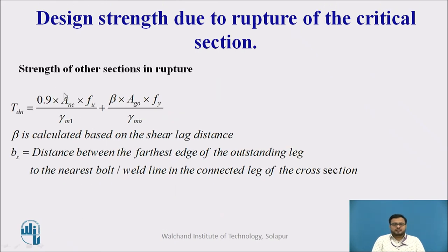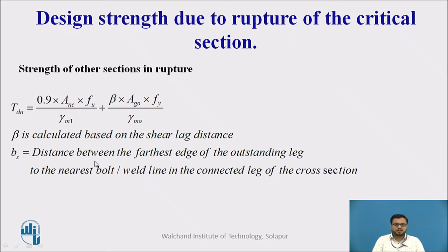For other sections such as channel sections, T-sections, or built-up sections, the formula is TDN = 0.9 · ANC · Fu / γM1 + β · AG0 · Fy / γM0, similar to the angle section. Here β is calculated based on the shear lag effect, and BS is the distance between the farthest edge of the outstanding leg to the nearest bolt or weld line in the connected leg of the cross section.